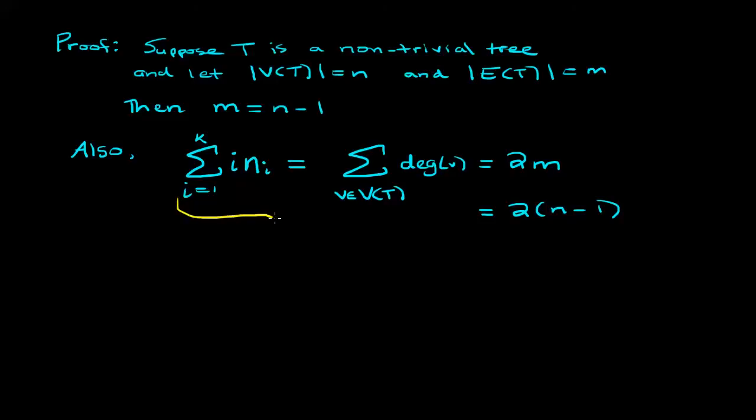You may be wondering why is it that the sum of all of these i times n_i's is equal to the sum of the degrees. Just think about a particular value of i and n_i. Then you'll have a bunch of vertices which each have degree i, and there are n_i of these. I've drawn it as if there's only two but there could be any number.